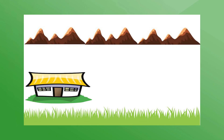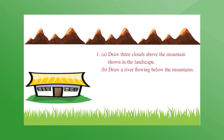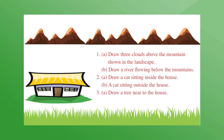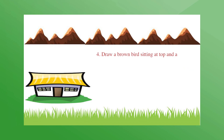Now it's time to complete a scene. I painted a hut and a few mountains, but could not complete it — you have to complete the scene using the given clues. First, draw three clouds above the mountain. Next, draw a river flowing below the mountain. Then draw a cat sitting inside the house. After that, draw a cat sitting outside the house. Now draw a tree near the house and one more tree far from the house. Then draw a brown bird sitting on top of the tree that is near the house.